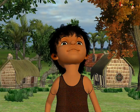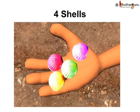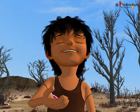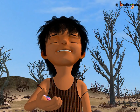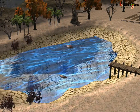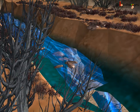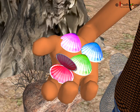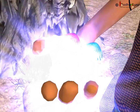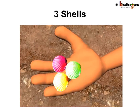So, how many shells were left with the fisherman after that? One, two, three, four. Yes, four shells were left. When another wish was made by the fisherman to fill all the rivers and ponds, what happened? Out of the remaining four shells, one more shell was taken away. Now, out of the four shells, how many shells were left? One, two, three. Yes, three shells were left with the fisherman.